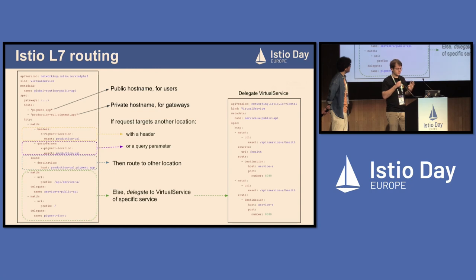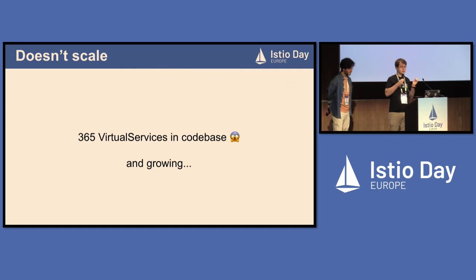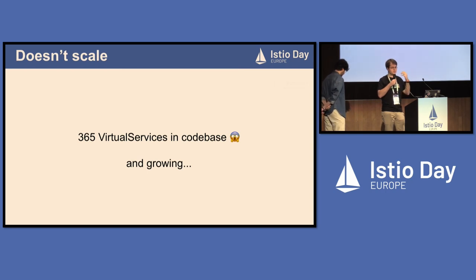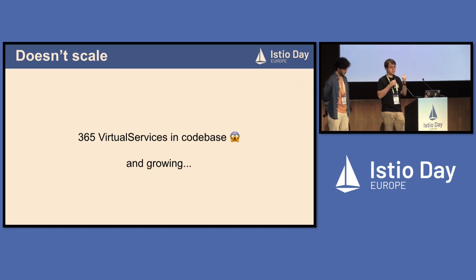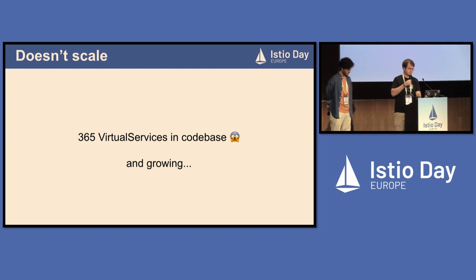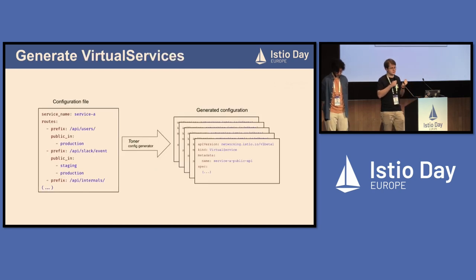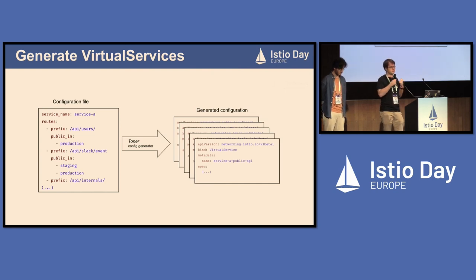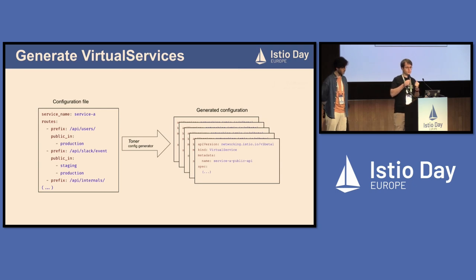A downside is that it's a lot of virtual services to maintain, update, and track. We have many services, many environments, and this number increases every day — it's error-prone and tedious, especially for developers. To tackle that, we decided to generate the virtual services from a configuration file listing the endpoints for each service. We no longer modify hundreds of files by hand; it's much quicker, less error-prone, and developers are much happier.